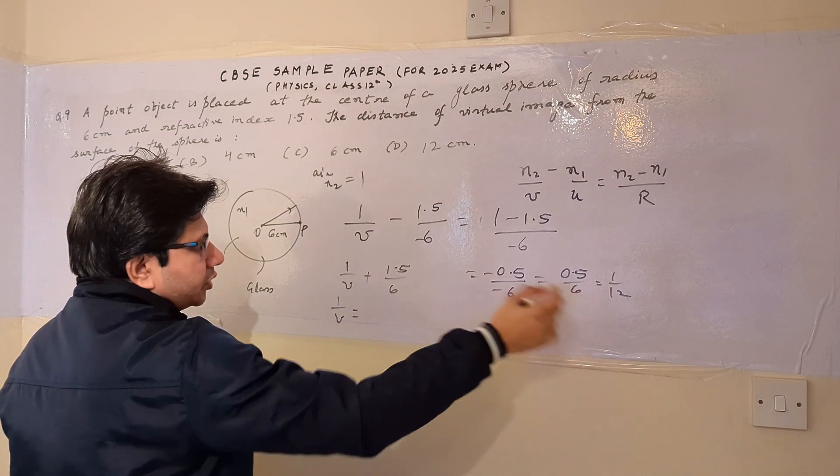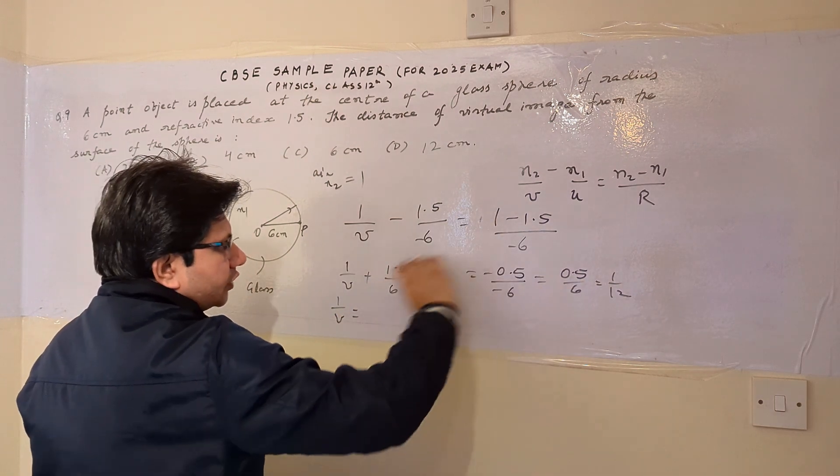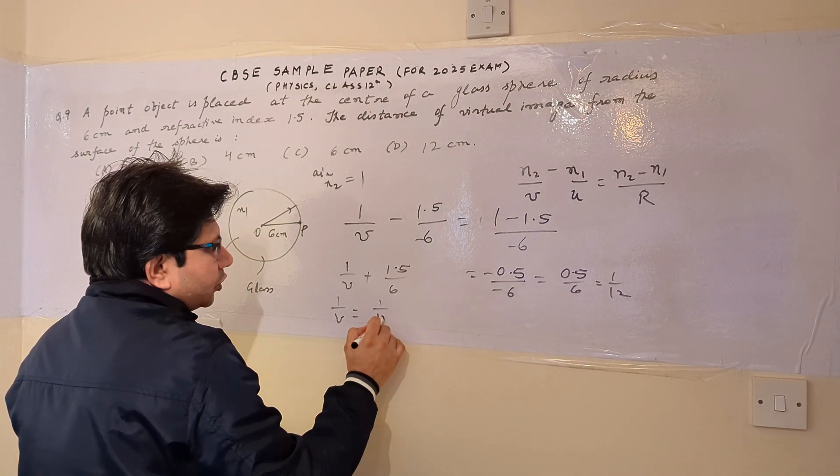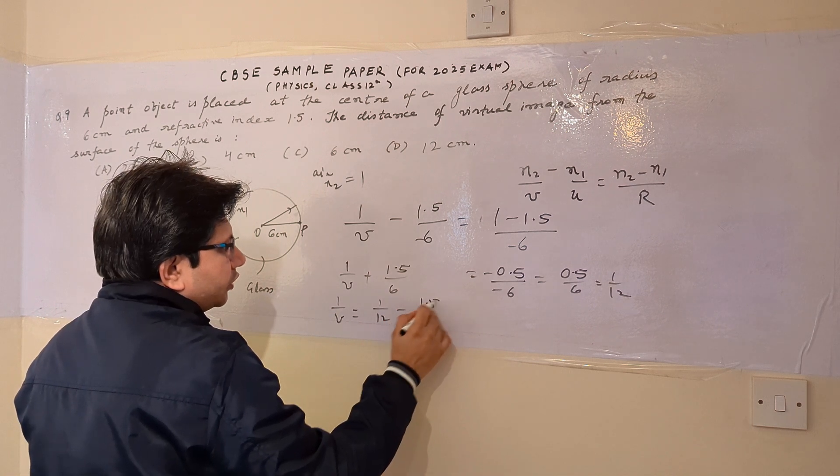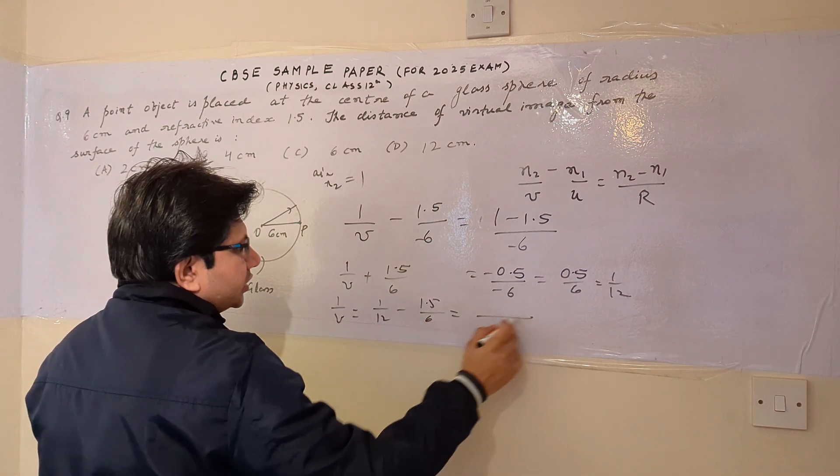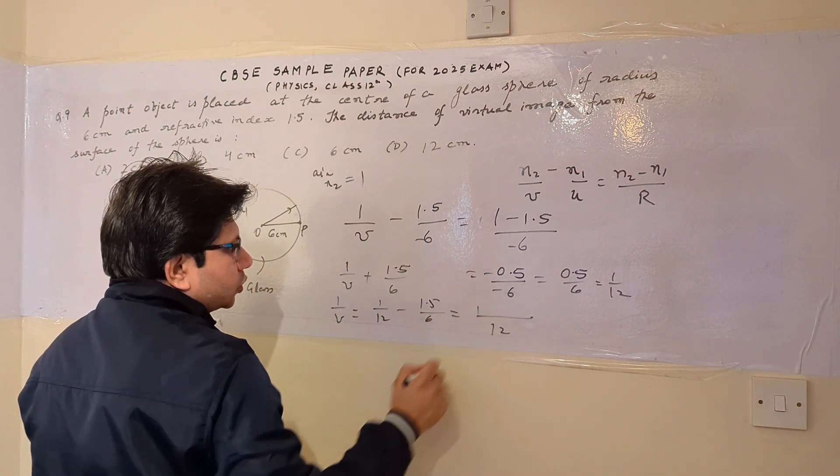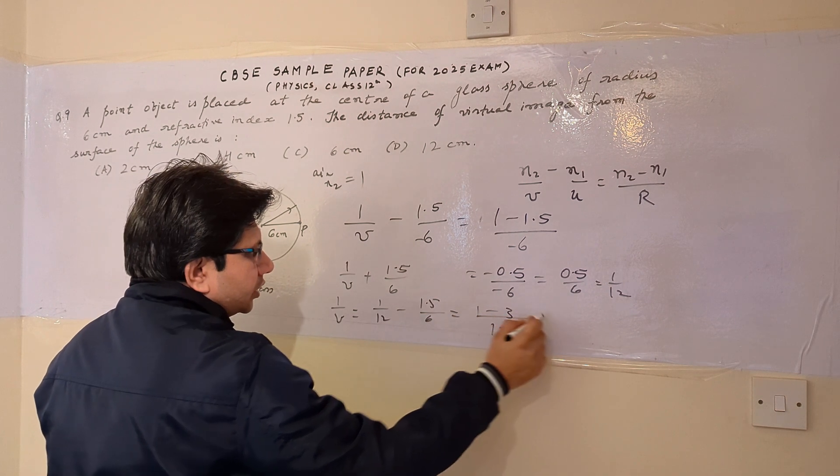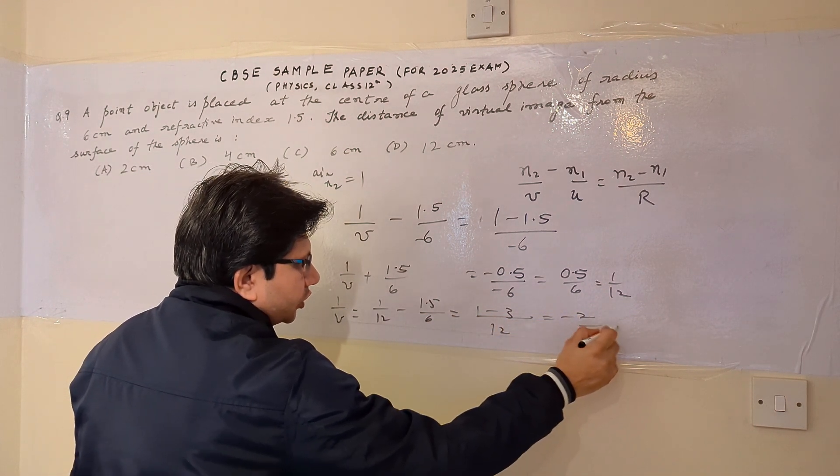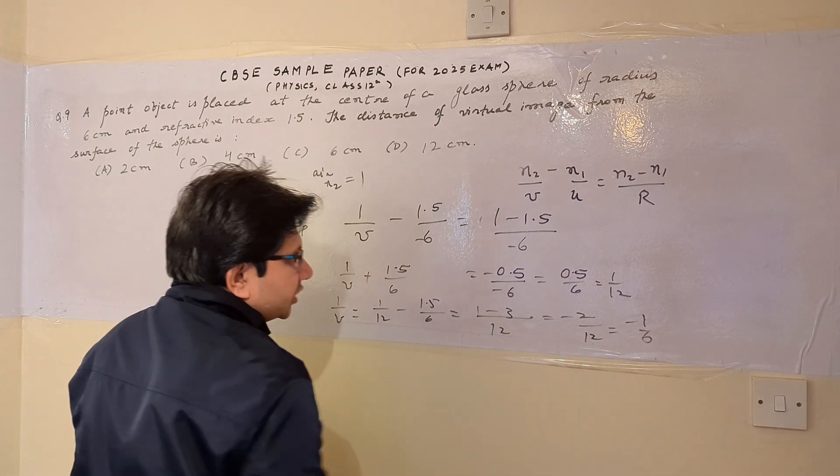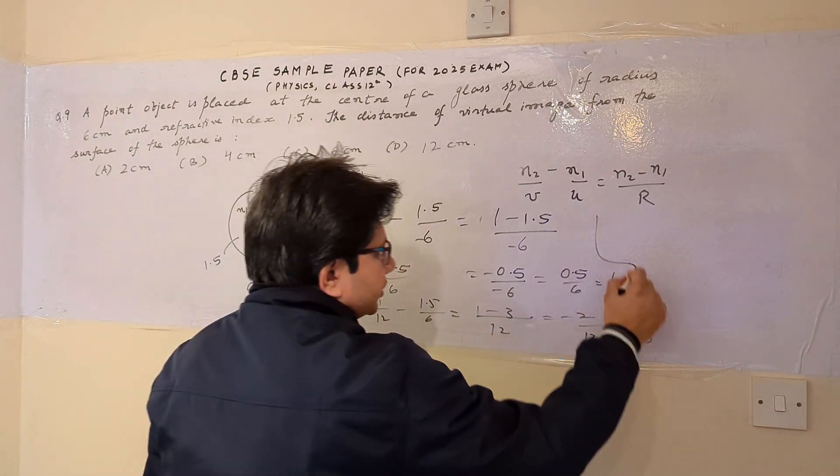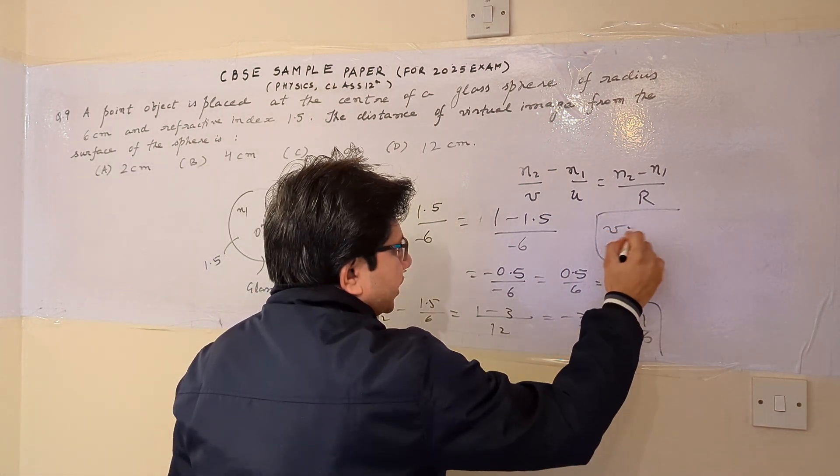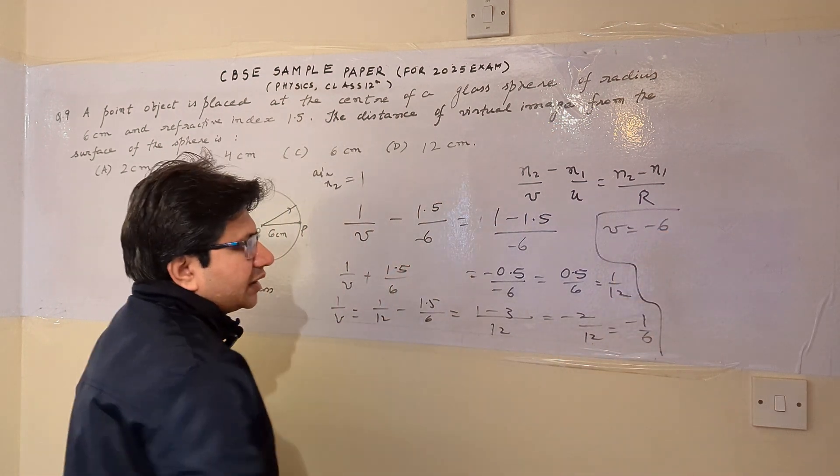Now 1 upon V equals 1 upon 12 minus 1.5 upon 6. So the LCM is 12. This is 1 minus 3, so we get minus 2 upon 12, which is minus 1 upon 6. After solving this, we get the value of V as minus 6 centimeters.